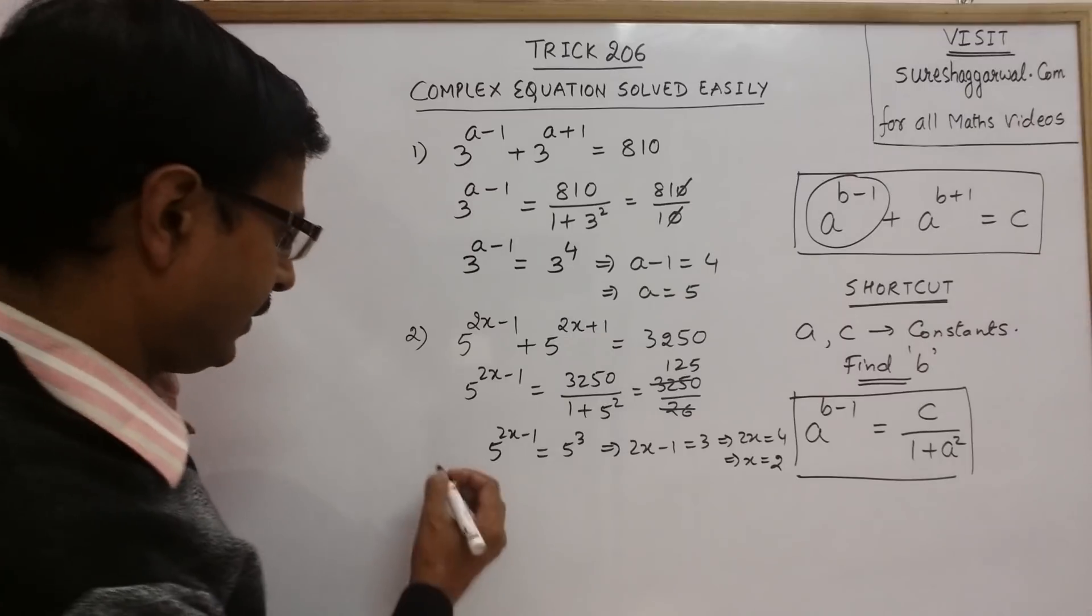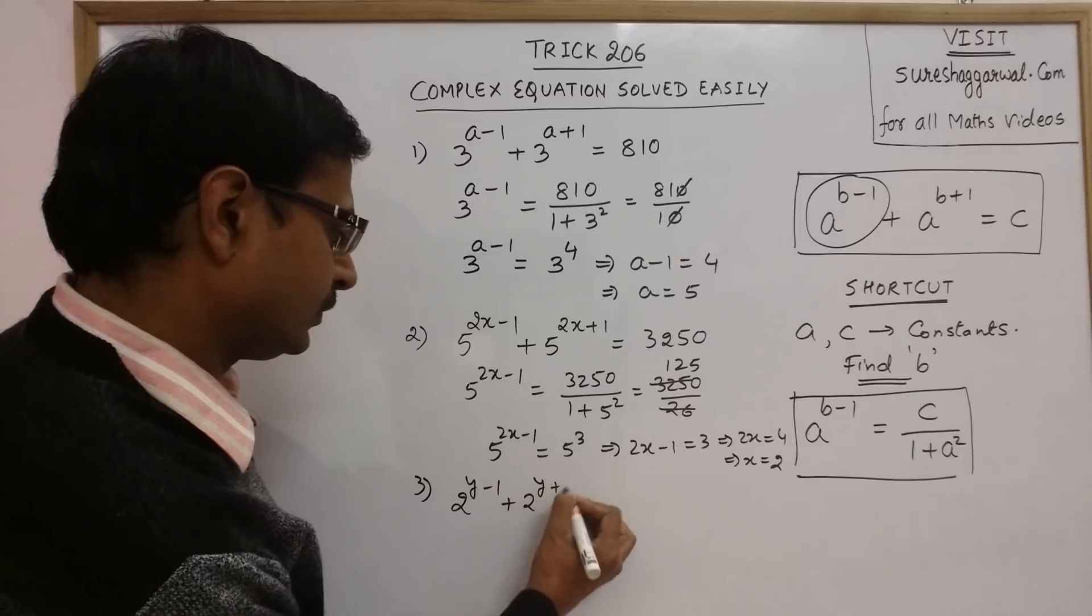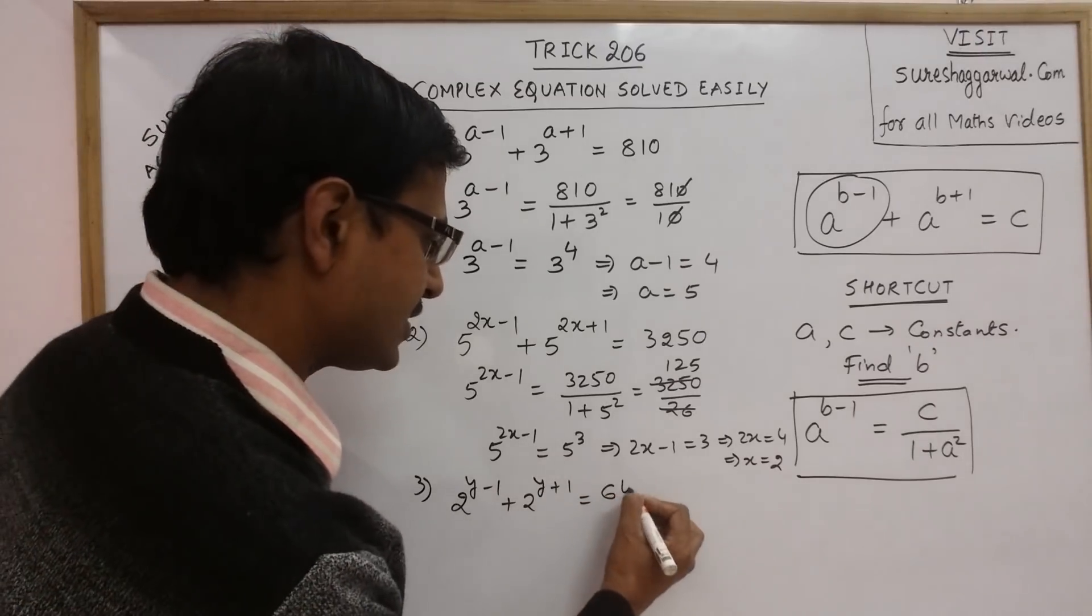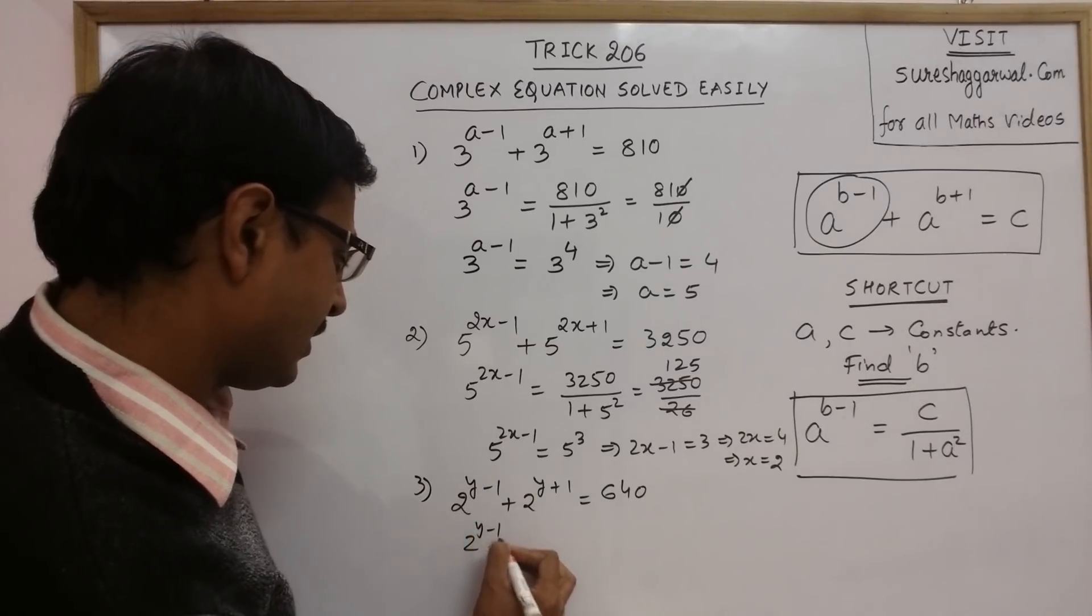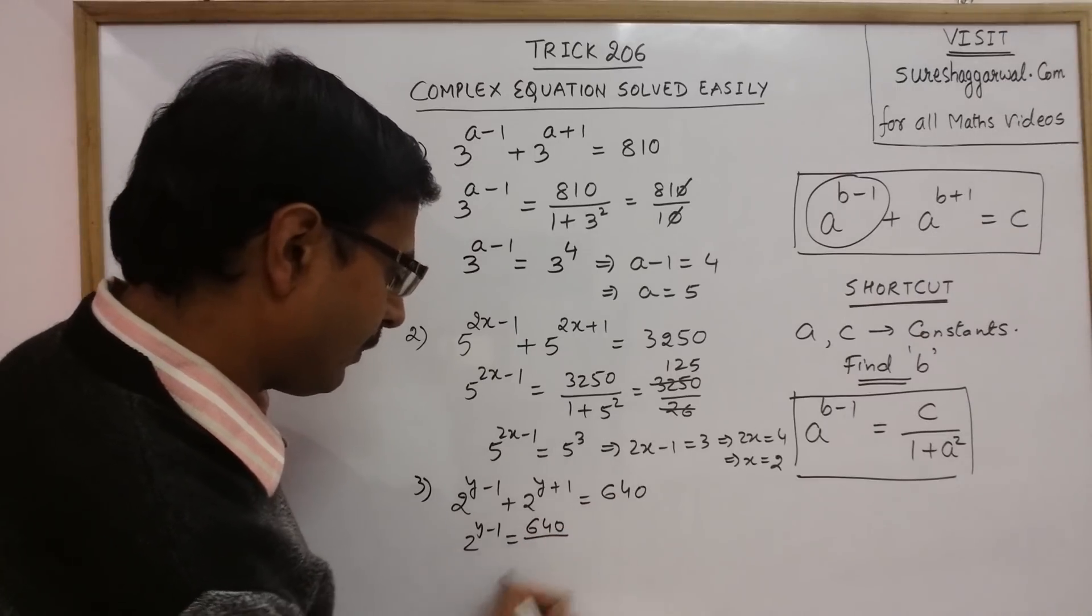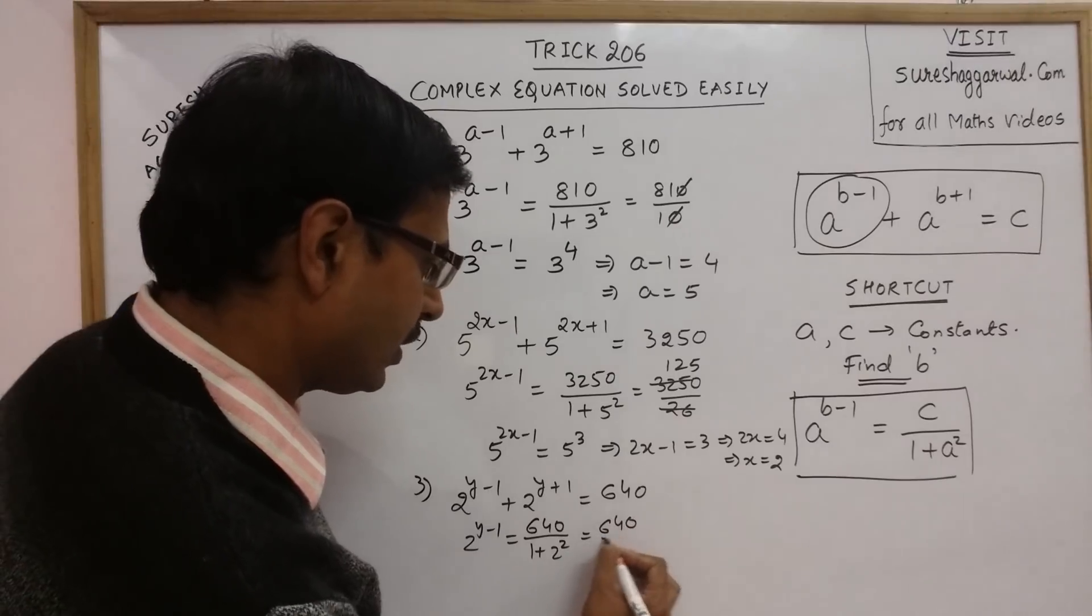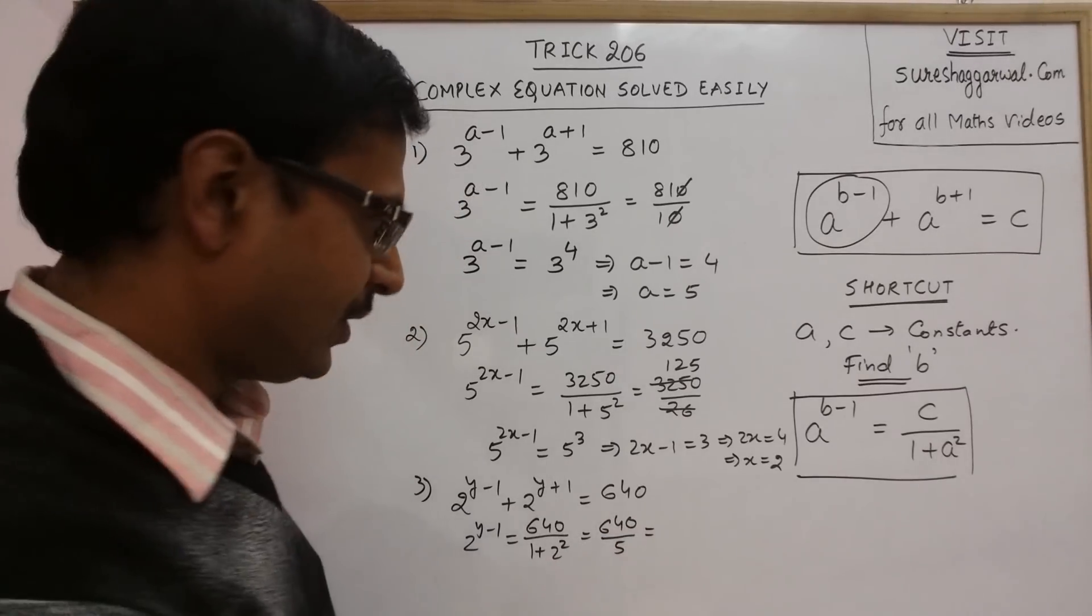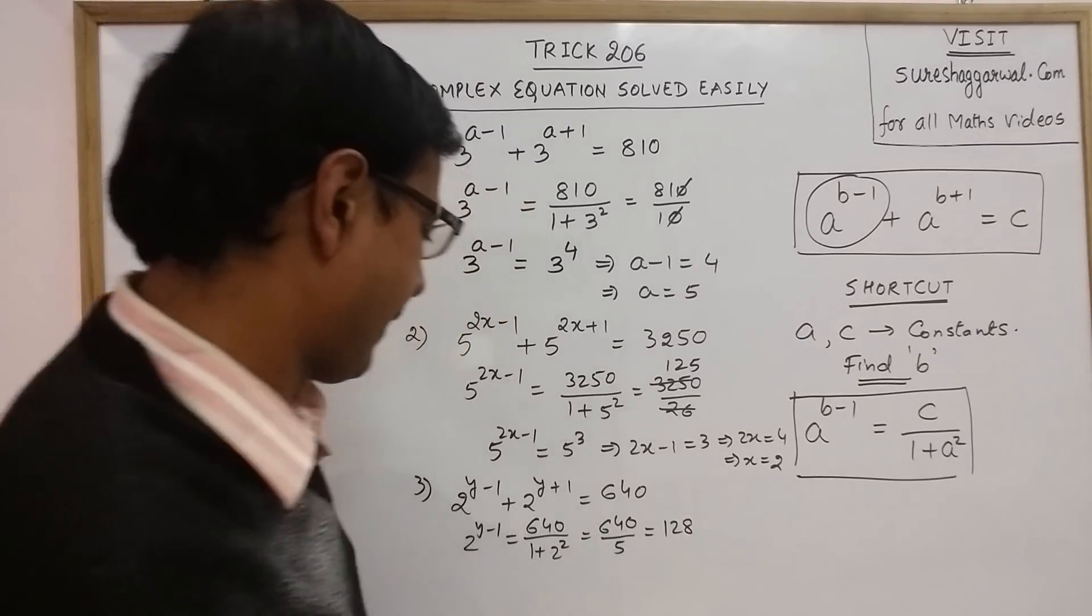One more. See, we have the powers of 2 now and in the RHS obviously, we will have a term which can be reduced easily. So, 2 raise to power y minus 1 will be equal to, this is 640 upon 1 plus 2 square. So, 640 upon 5 and when you divide 640 by 5, you will get 128.